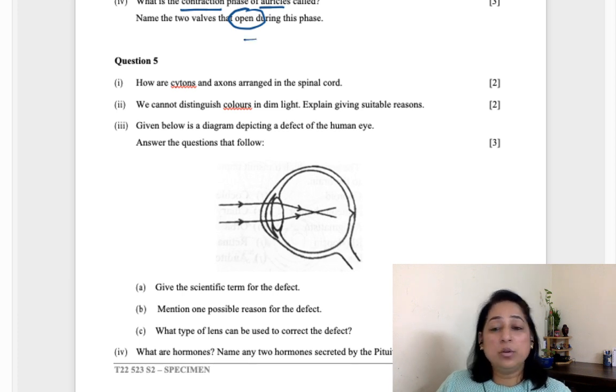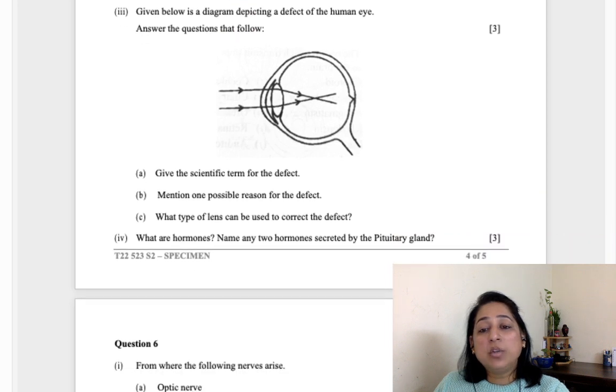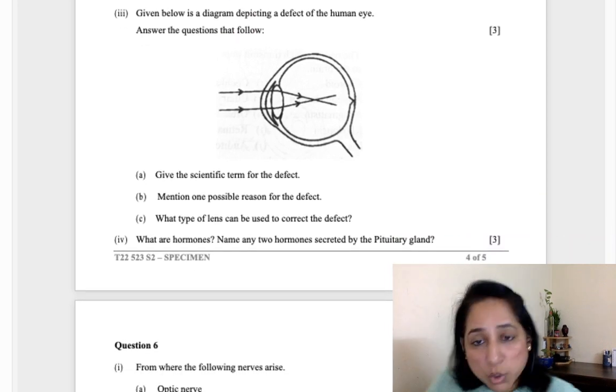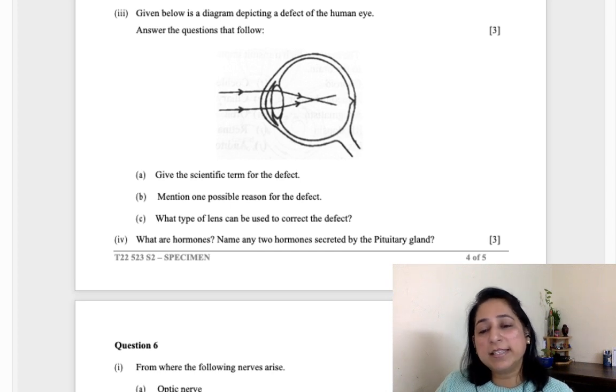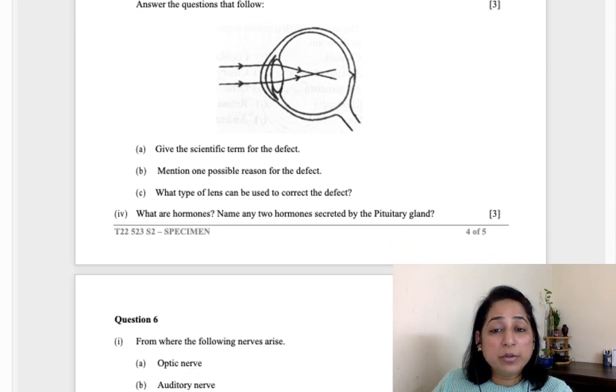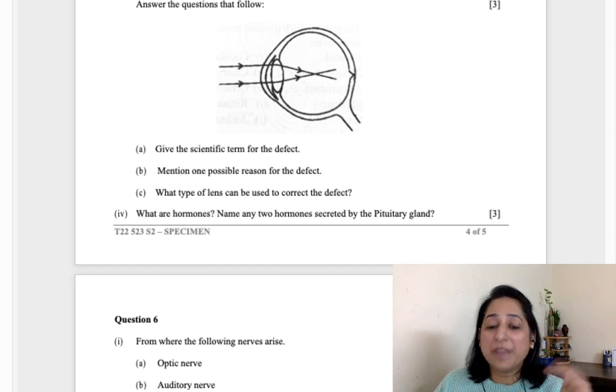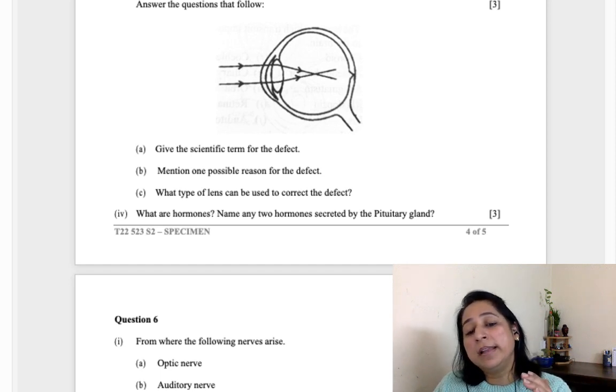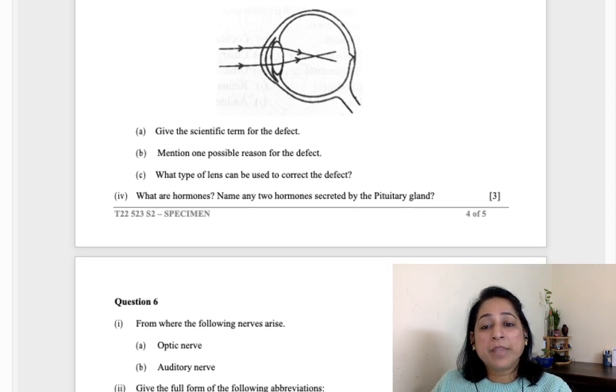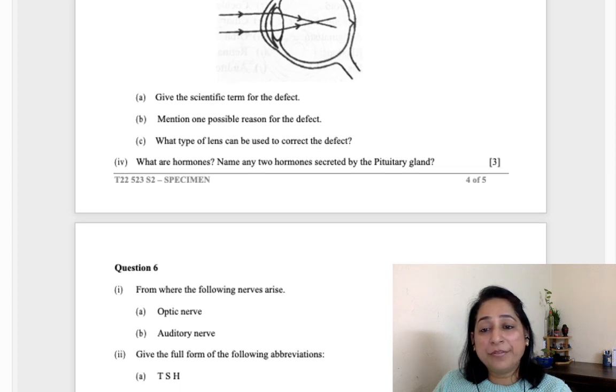How are cytons and axons arranged in the spinal cord? Cytons towards the inner side and axons towards the outer side of the spinal cord. Gray and white matter: cytons form the gray matter, axons form the white matter. Why are we unable to distinguish colors in dim light? Explain giving suitable reasons. During dim light the pigment which is secreted in the eyes is rhodopsin, and iodopsin is responsible for colored vision. Hence when iodopsin is not produced in dim light, we are unable to identify different colors.